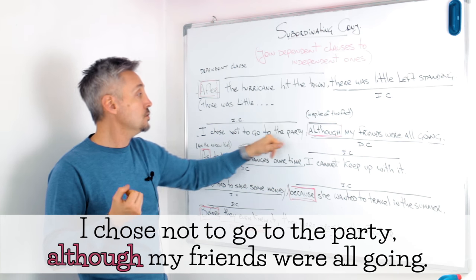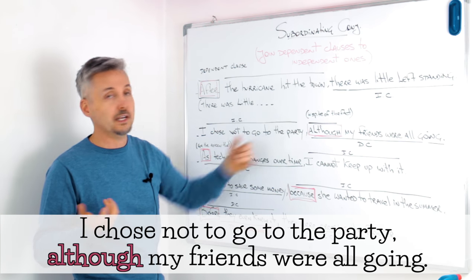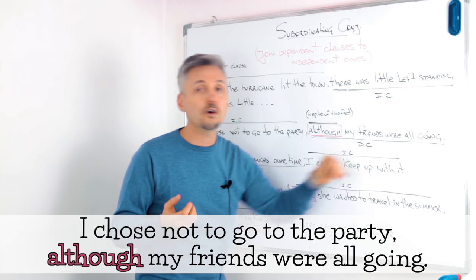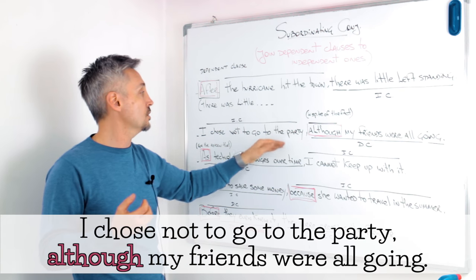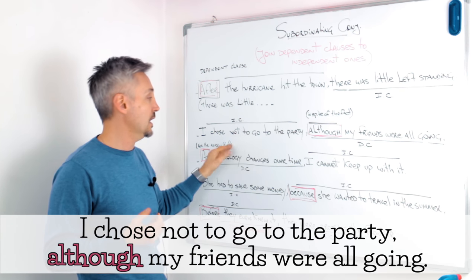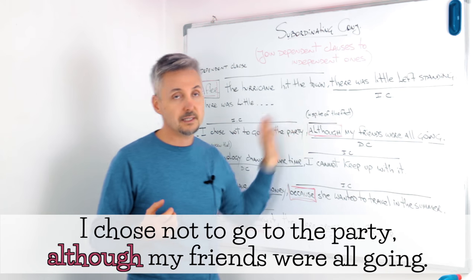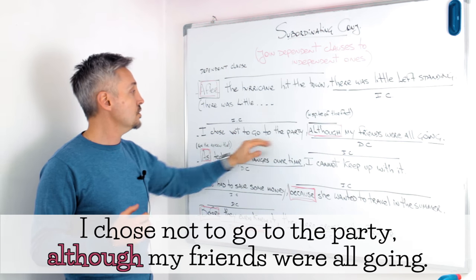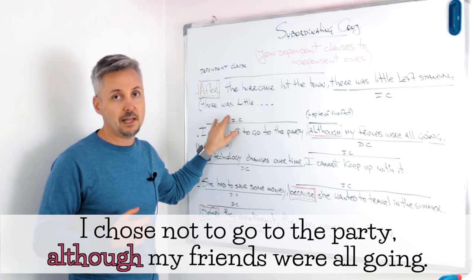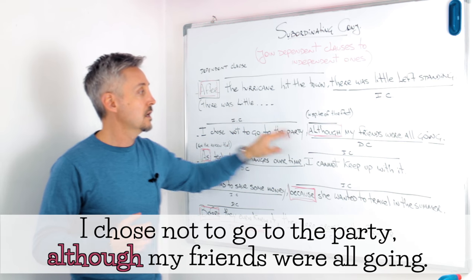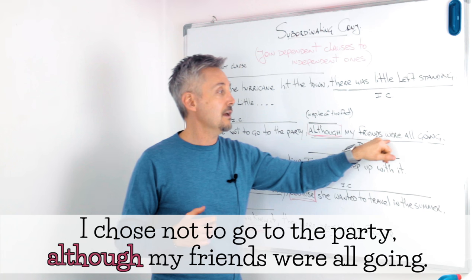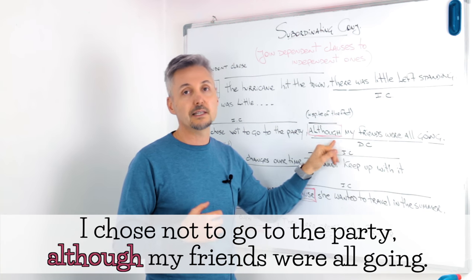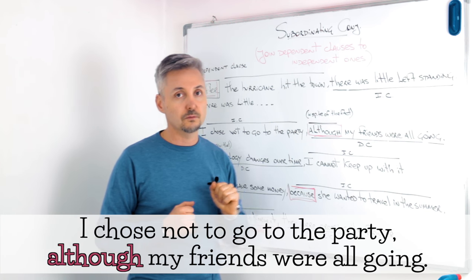So, 'I chose not to go to the party' — although my friends were all going, I chose not to go to the party. It's the same order. 'I chose not to go to the party' is an independent clause, and 'although my friends were all going' is a dependent clause.